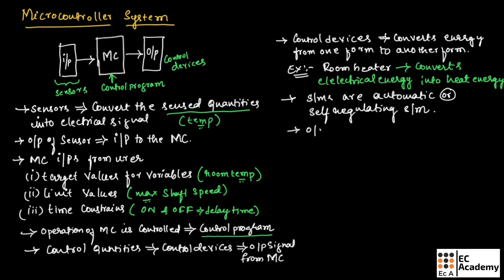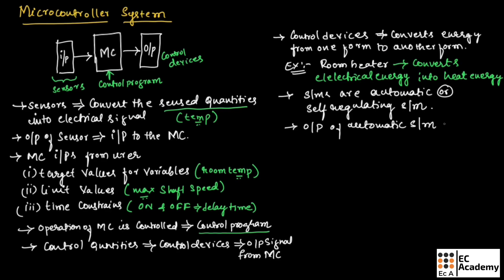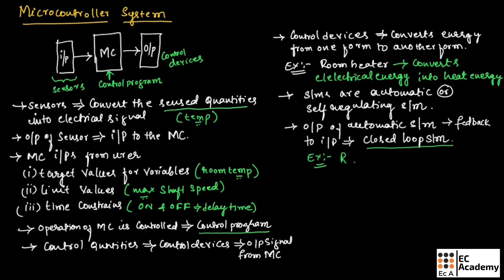The output of a self-regulated or automatic system is usually fed back to the input so that the output is controlled. Such types of systems are known as closed loop systems. An example is a room temperature control system, where the output is continuously fed back to the input so the system can understand the room temperature and produce the output correspondingly.